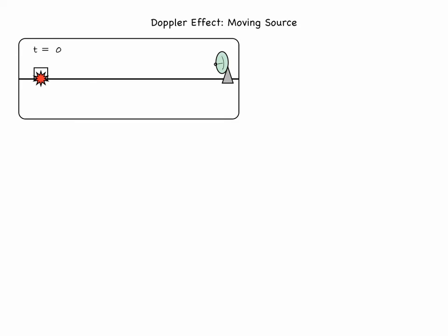Let's look at the source as it bleeps one step at a time. We begin at time equals zero when the source emits the first bleep. T seconds later, at time equals t, the first bleep has traveled a certain distance d towards the detector, and the source is about to emit another bleep. As the bleeps are emitted with period t, the sound wave traveling toward the detector will also have period t, and frequency f equal to 1 over t.